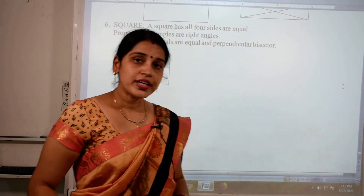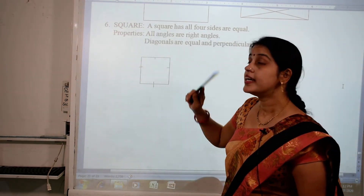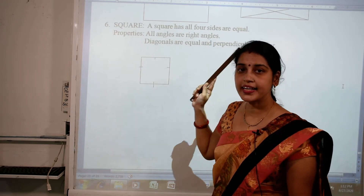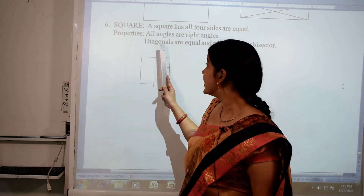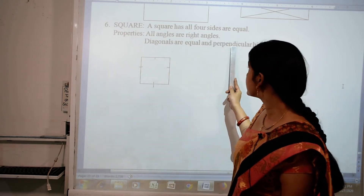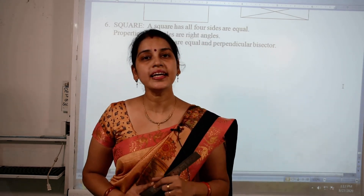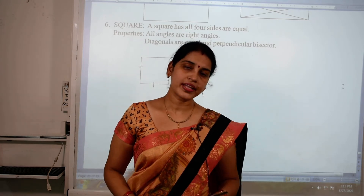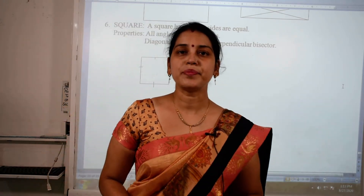Now the last type is square. A square has all four sides equal. Its properties: all four angles are of the same measure, and they are right angles, meaning 90 degrees. The diagonals are equal as well as they are perpendicular bisectors — where they cut, they form a 90 degree angle. This was all about kinds of quadrilateral, which will be helpful in solving exercise 3.3 and 3.4.